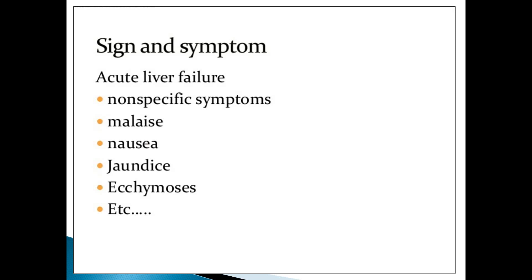The signs and symptoms are the same as acute liver failure. The patient is very irritable, there will be nausea, jaundice, ecchymosis, and all features of chronic liver disease may be present — spider angioma, pedal edema, ascites, sacral edema, finger clubbing, pulmonary edema, etc.